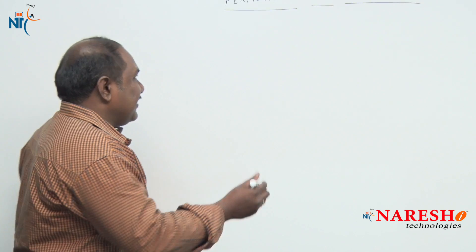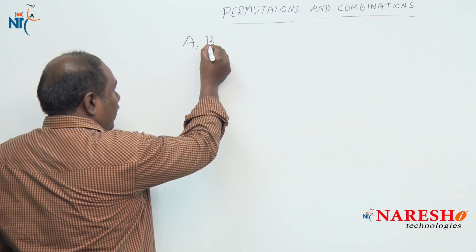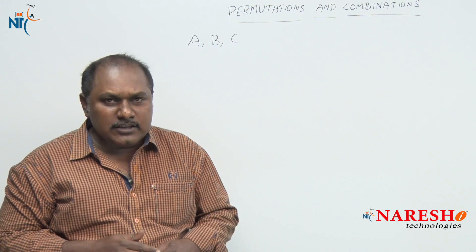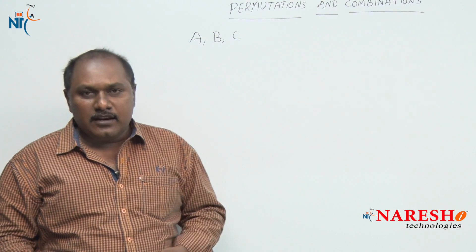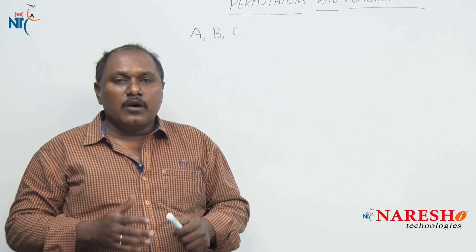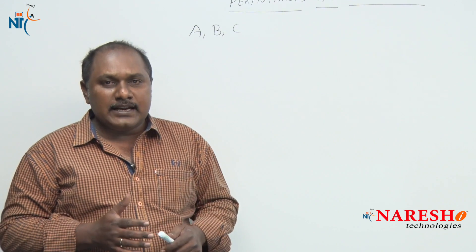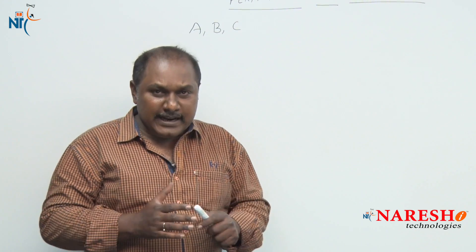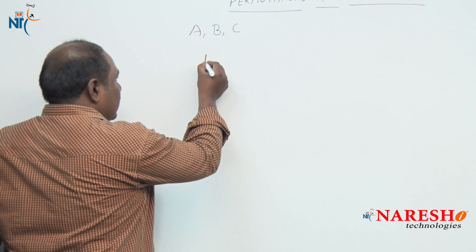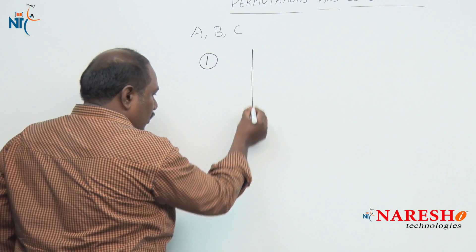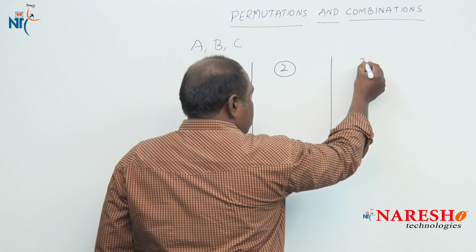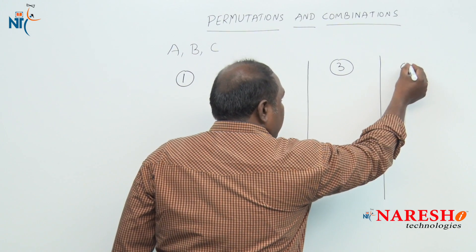With a small example, let us start. Let us suppose there are three friends A, B, C who want to go to a newly released movie. All three friends stand in a line to purchase the tickets. The possibilities are: they may get one ticket, or two tickets, or three tickets, or they may not get any ticket.